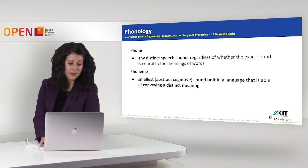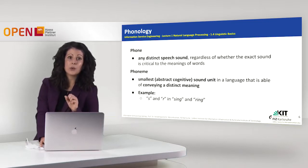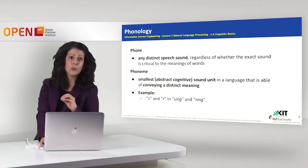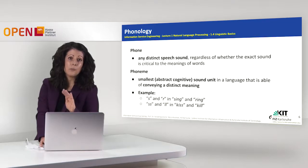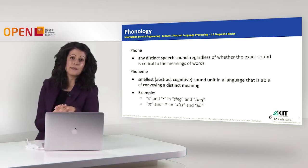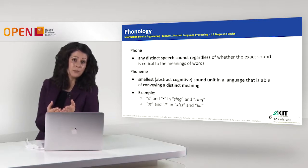Let's see the difference with a real example. Here we have S and R, where those two are phonemes. Why? Because when they are used in the words 'sing' and 'ring' they completely change the meaning of those words. And then again we have another example: double S and double L, which again are phonemes, since in the words 'kiss' and 'kill' they again completely change the meaning of the words. On the other hand, the character I is a phone because when it is used in both words it doesn't change the meaning of the words.